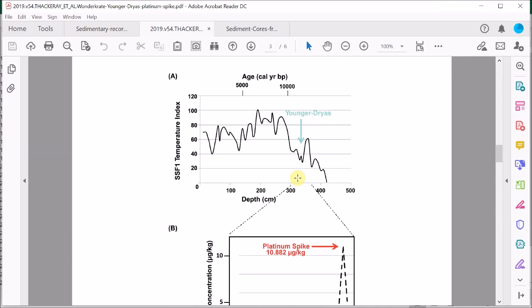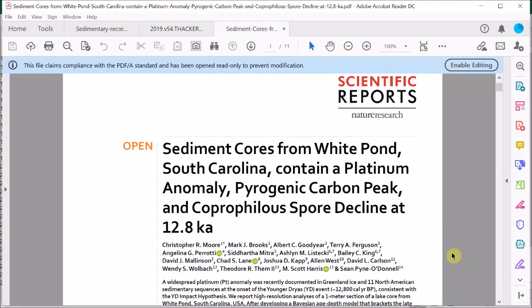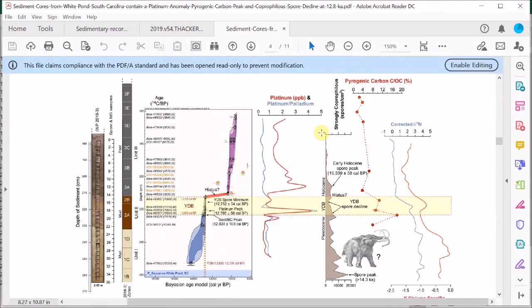Yet more evidence in favor of the Younger Dryas impact. So let's move on to our final paper. So this time the evidence is from an ancient lake or pond known as White Pond in South Carolina. Now the title of this paper says it all. At the exact time expected, we have another site where we find platinum, soot, and a decline in fungal spores indicating a decline in megafauna.